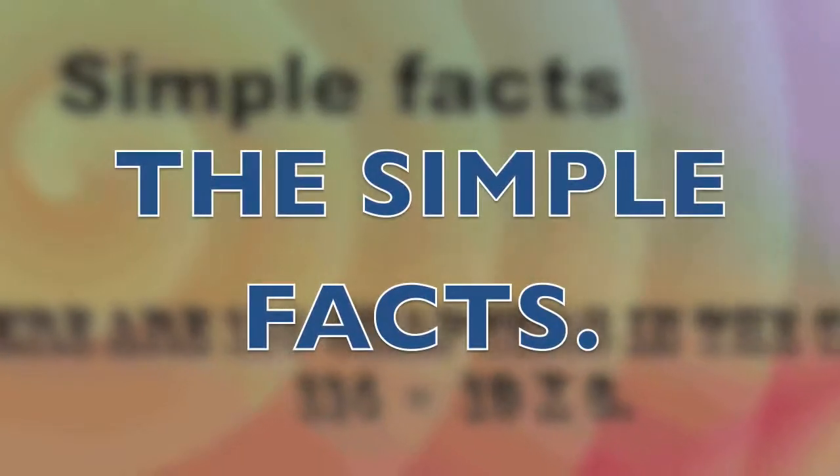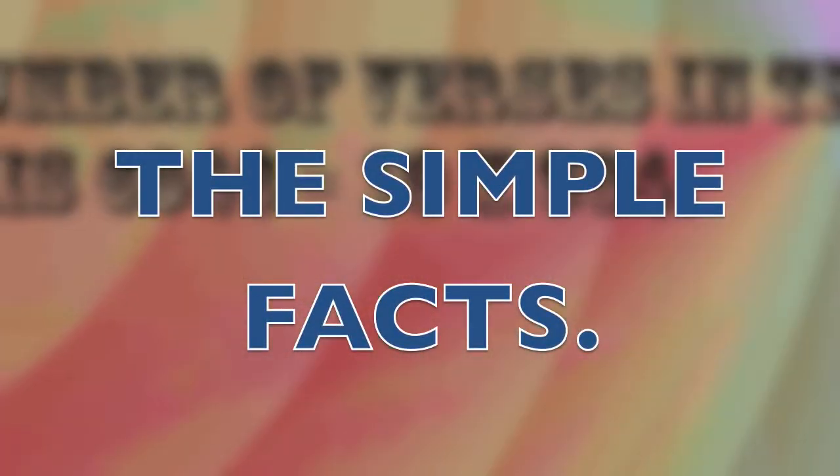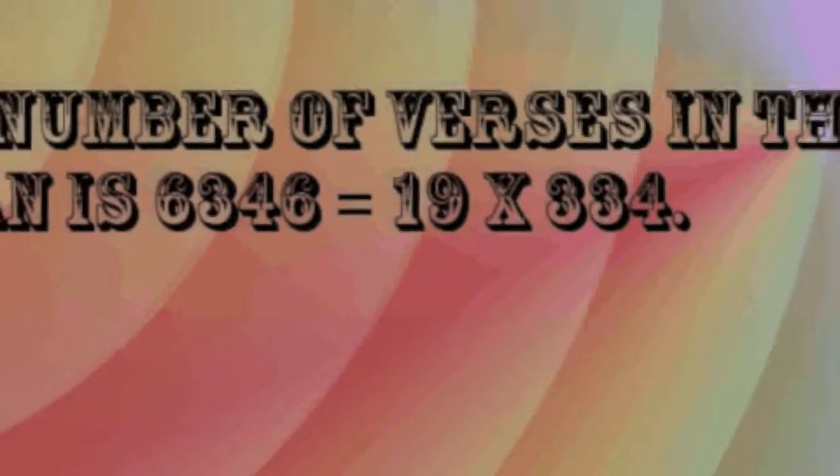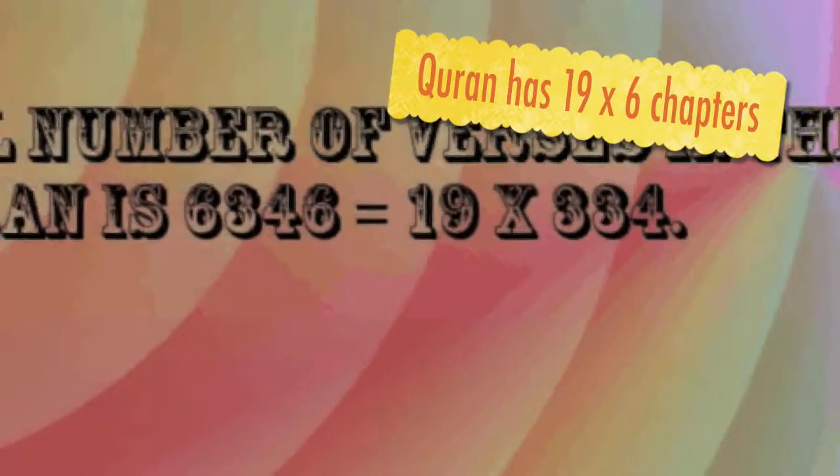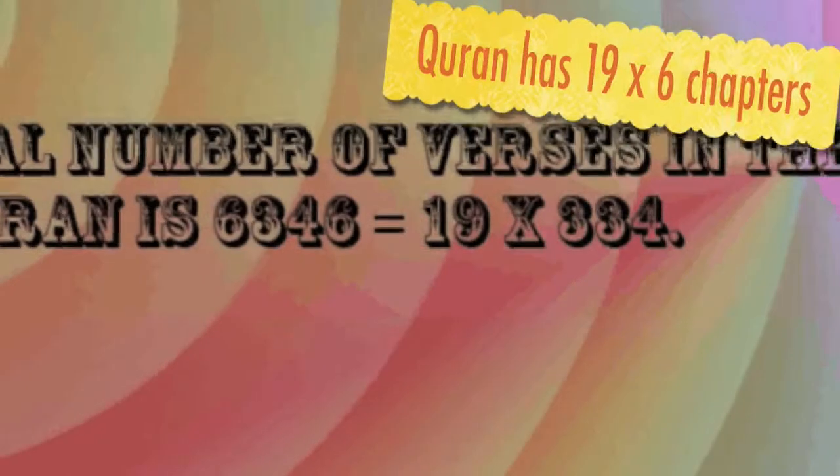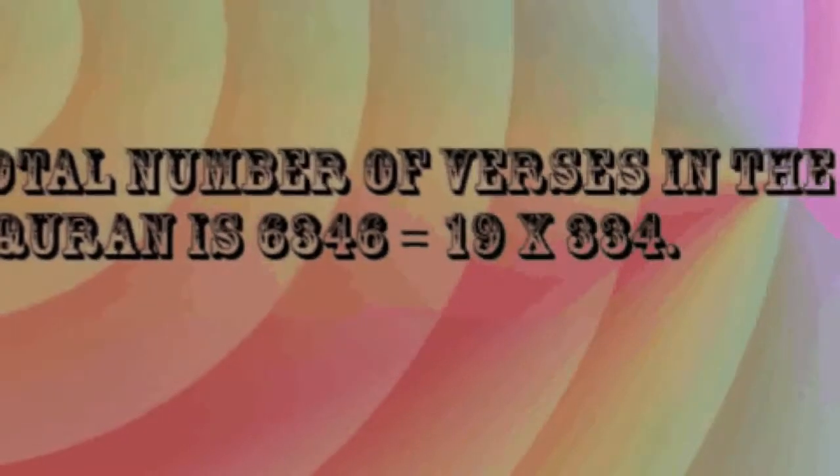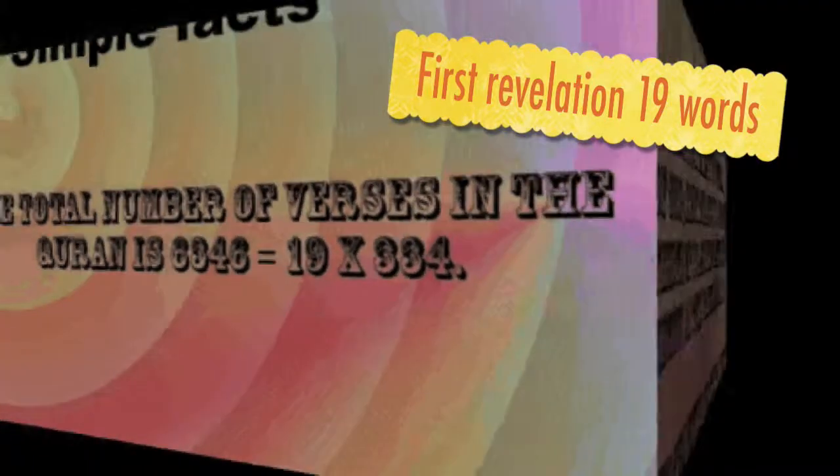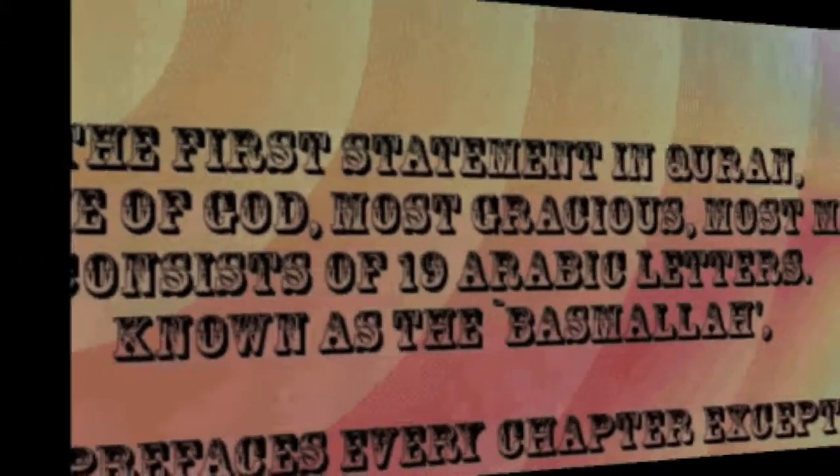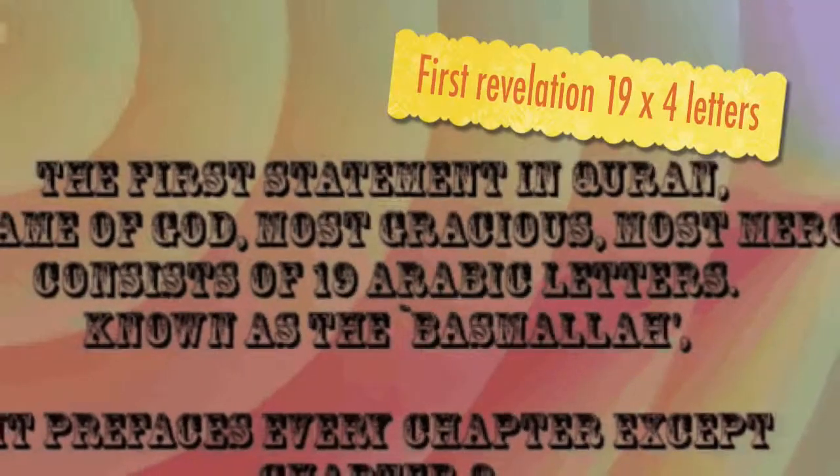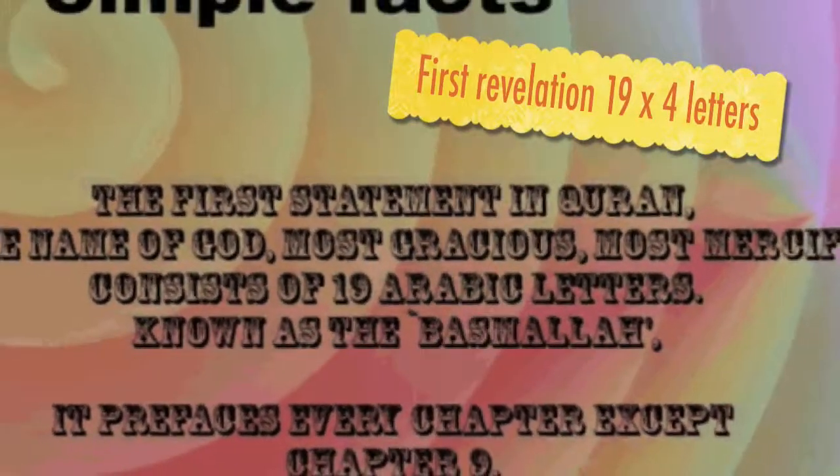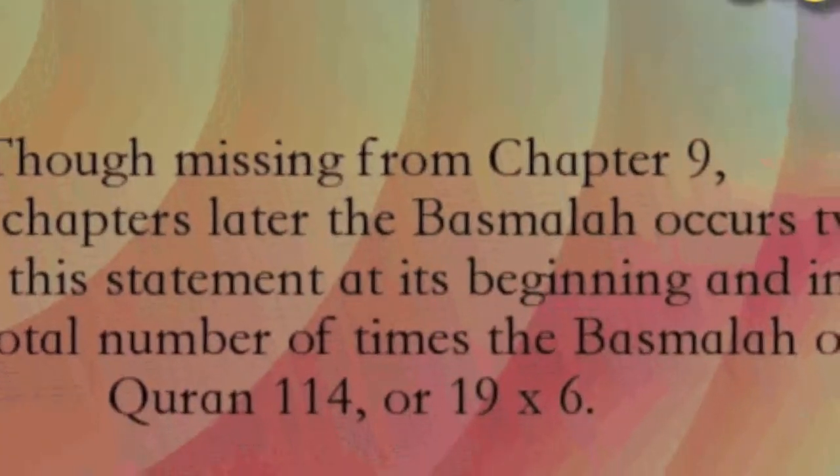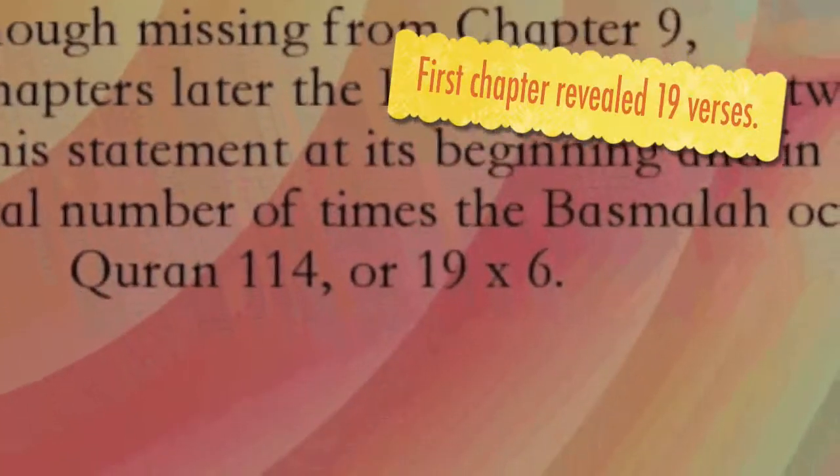The Simple Facts. 1. The opening statement of Quran consists of 19 letters. 2. Quran consists of 114 chapters, or 6 times 19. 3. The first Quranic revelation, 96:1-5, was 19 words. 4. The first revelation consists of 76 letters, or 19 times 4.